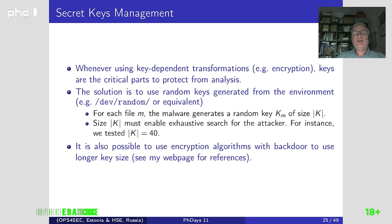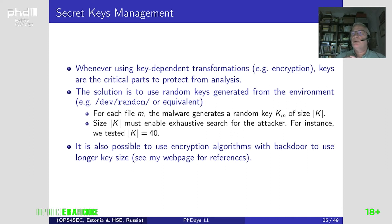For key management, if you use a key-dependent transformation such as encryption or statistical profile mimicking, you have to protect the key, assuming the malware will be analyzed. The solution we developed uses random keys generated from the environment. We consider a key size of 40 bits, which is large enough to prevent exhaustive search for every file used to exfiltrate data. It is also possible to use an encryption algorithm with a backdoor, which is convenient since you can then use longer key sizes.